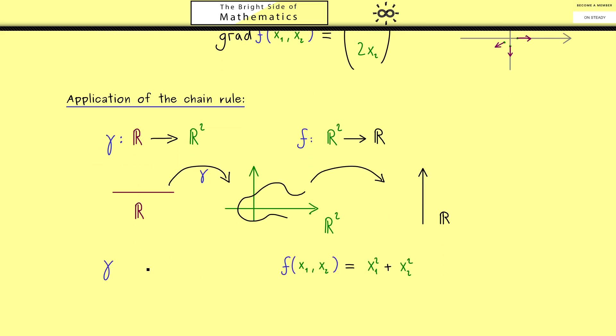Indeed for γ I want to choose a map that describes a circle in the plane. Moreover I will use t for the variable of this map. And now for example a circle can be described by using cosine of t and sine of t.